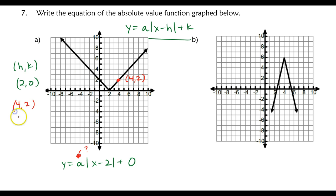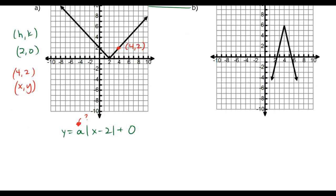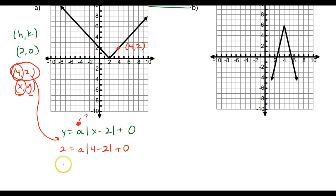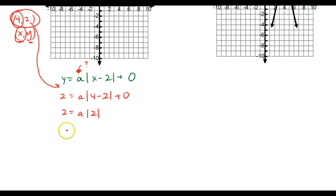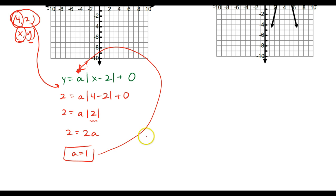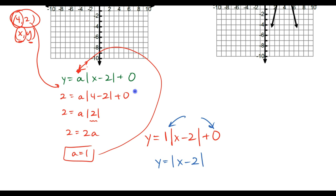Let's pick the point four, two. I could pick any point I want — it doesn't matter. Four, two represents an x, y pair. You've done this before with linear equations. All you need to do now is plug in four, two for x and y. Y is replaced with two, a is still unknown, and the x term is now four. So I have four minus two plus zero. I get two equals the absolute value of two times a. The absolute value of two is just two, so I have two equals two a. Divide out the two, and I'm left with a equaling one.